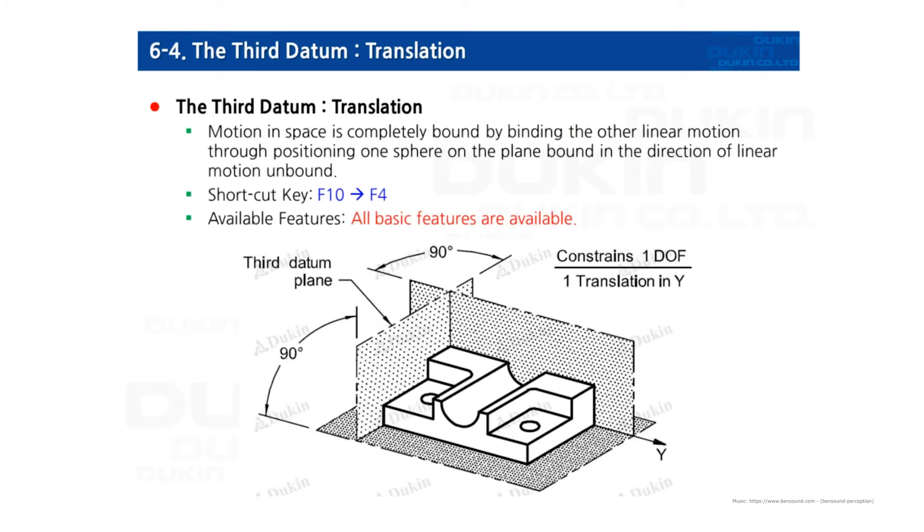And for the third step, translation. Translation constrains whichever linear motions are left over after leveling and rotation.